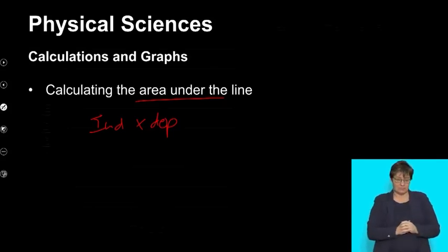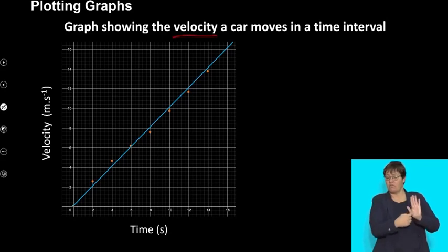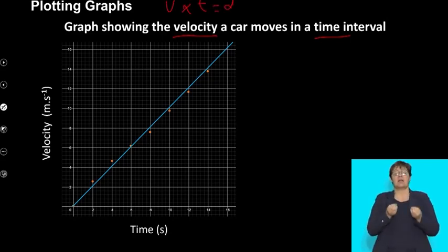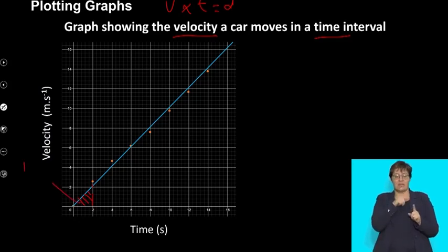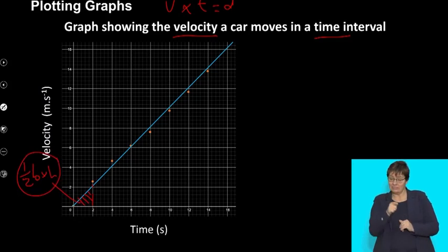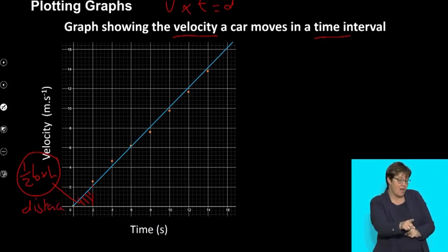If we look at this graph which shows velocity over a period of time and it's a car travelling, we know that velocity times time is going to give you distance. So the area under this graph can be used to work out the displacement or the distance versus time graph. That little area is a triangle and we would use the formula for the triangle as half base times height and that calculation will actually give us the distance the object moved in the first two seconds.